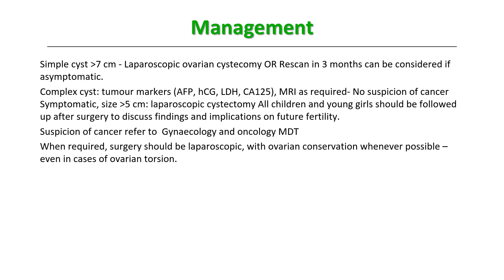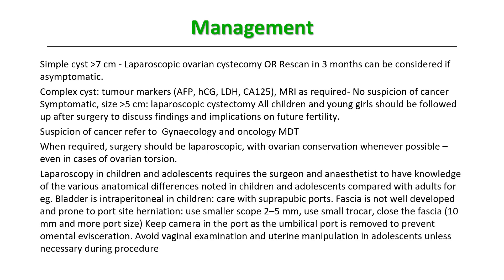Surgery should be laparoscopic whenever possible, with ovarian conservation. Even in cases of ovarian torsion, go for a conservative approach. Laparoscopy in children and adolescents requires the surgeon and anaesthetist to have knowledge of anatomical differences compared to adults — for example, the bladder is intraperitoneal in children, so be very careful with suprapubic ports. Fascia is not well developed and prone to port-site herniation, so use smaller scopes of 2 to 5 mm and small trocars. Close the fascia if port size is 10 mm or more, and keep the camera in port as the umbilical port is removed to prevent omental evisceration.